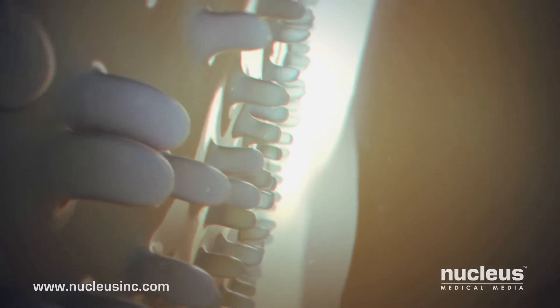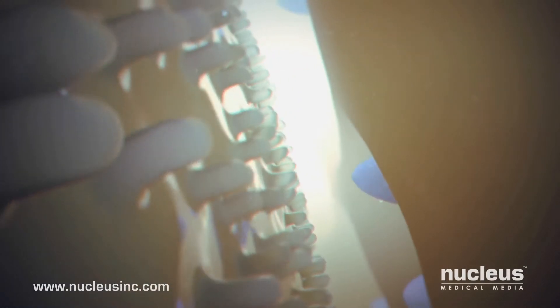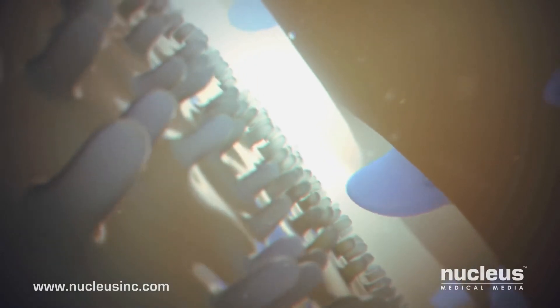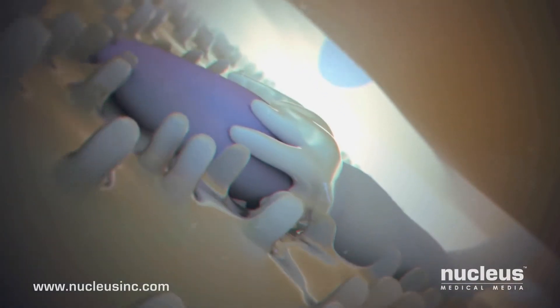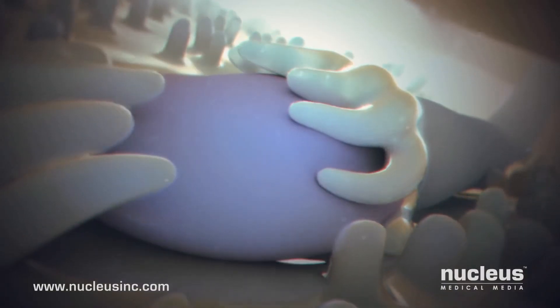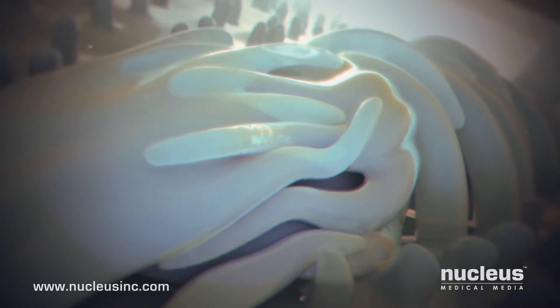Inside the zona pellucida is a narrow, fluid-filled space just outside the egg cell membrane. The first sperm to make contact will fertilize the egg. After a perilous journey and against incredible odds, a single sperm attaches to the egg cell membrane.